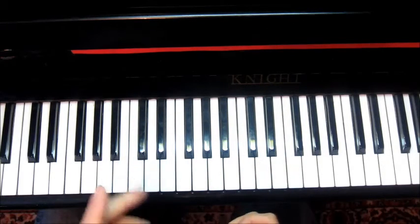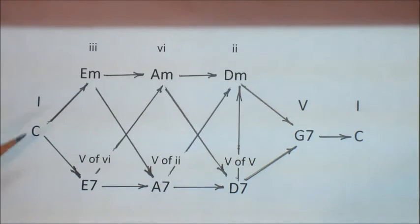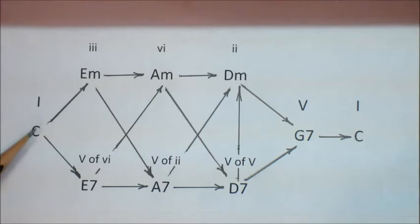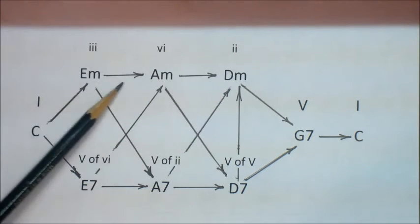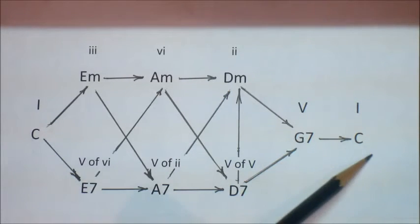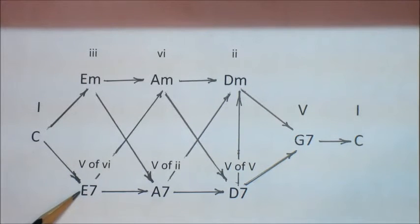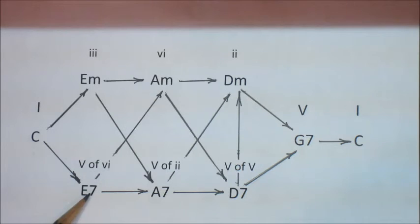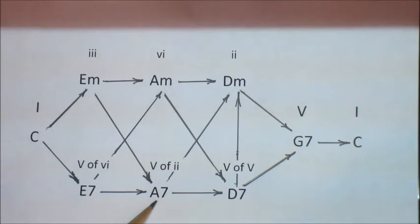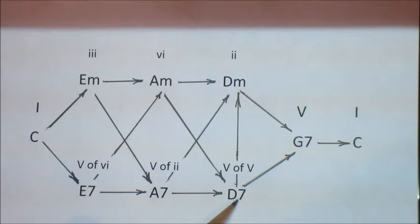There are so many possibilities. Here I am on a I chord. I can go right across the top diatonically: III chord, VI, II to V, and back to I. Or I can go V on V on V right across the bottom. E7 is the V of VI, but it could also go to A7 just as easily. A7 is the V of II, but it could just as easily carry on to the V of V, which would carry on to V.